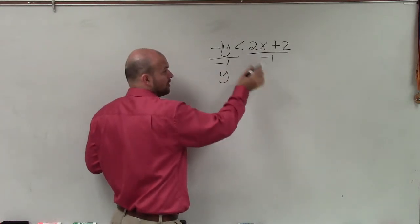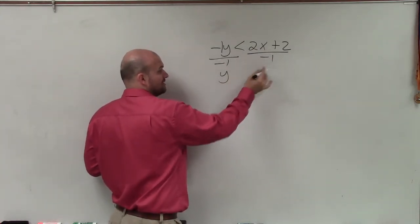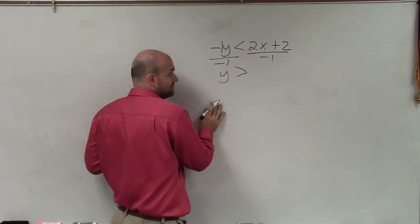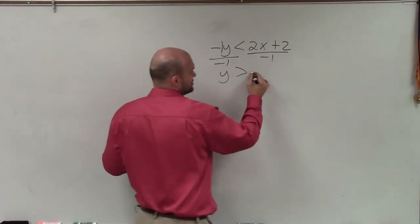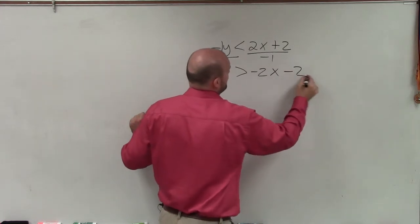And just like when solving one variable inequalities, whenever we multiply or divide by a negative number, we have to switch the sign. And then we divide this negative 1 into both of our terms of our expression. So now I have negative 2x minus 2.